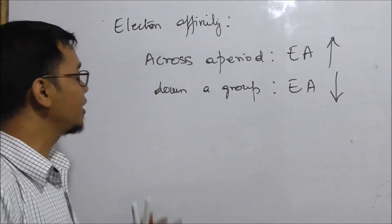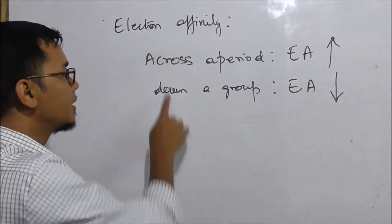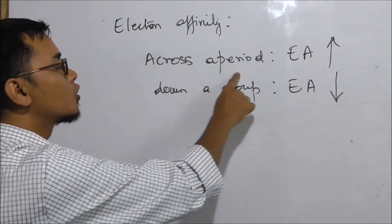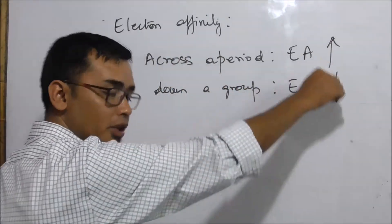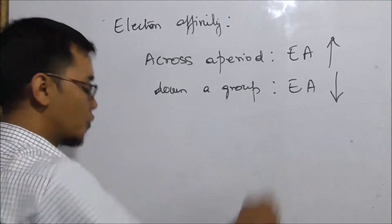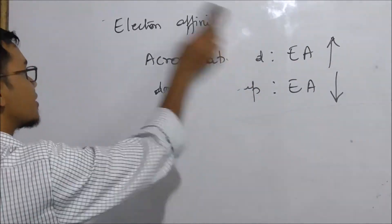Can you explain the variation of electron affinity across a period and down a group? Across a period, electron affinity increases, and down a group, electron affinity decreases.